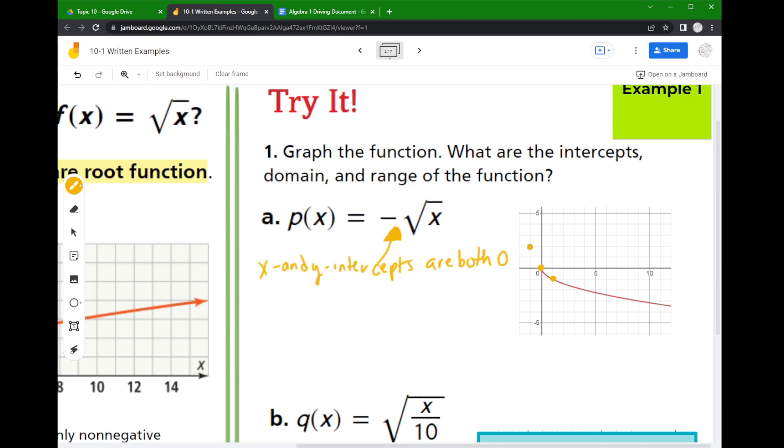Now the domain of this graph, if I look at this domain I'm thinking about how far to the left and how far to the right it goes. So this graph goes to the left and then stops at 0. And when I go to the right it goes on for forever.